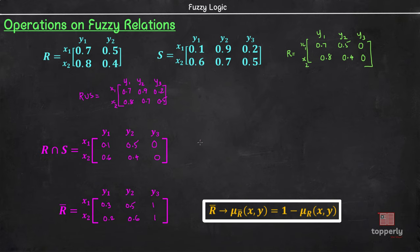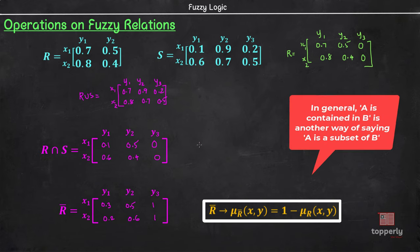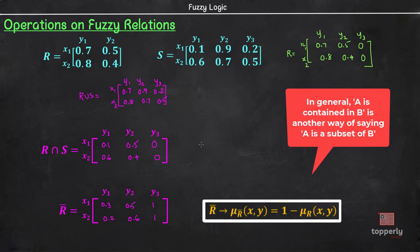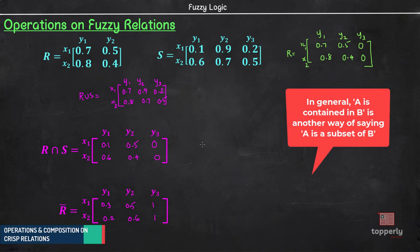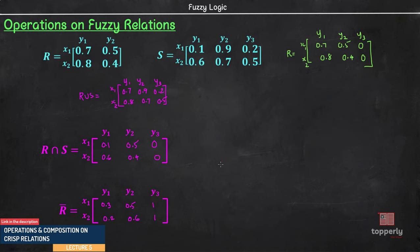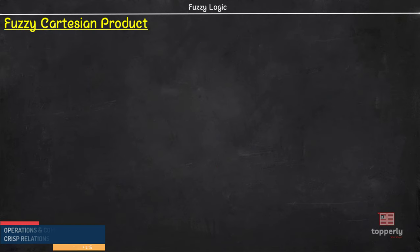Also, I am not discussing containment operation for fuzzy sets here as it is very similar to crisp relations and we have covered it in detail in lecture 5. So, please refer lecture 5 in case you haven't seen it. Now, finally, we have fuzzy cartesian products.